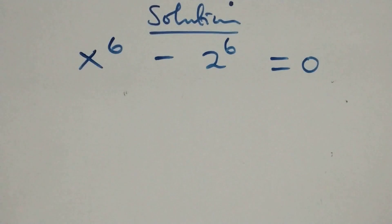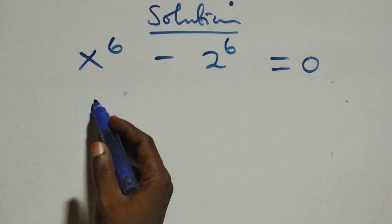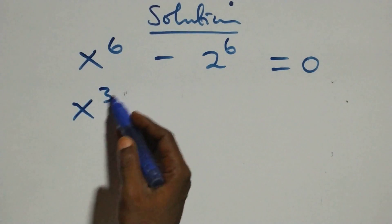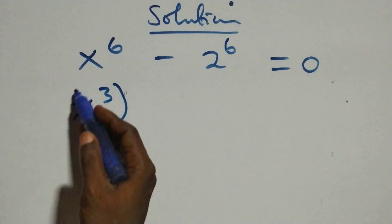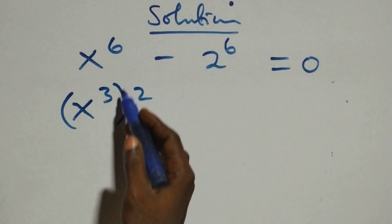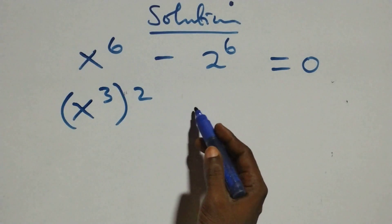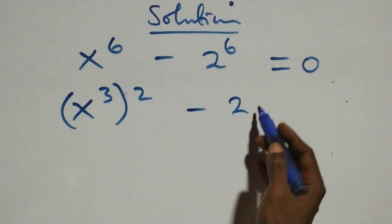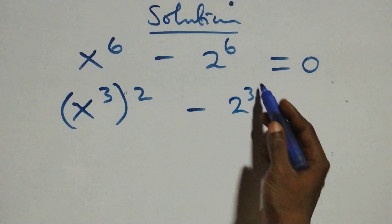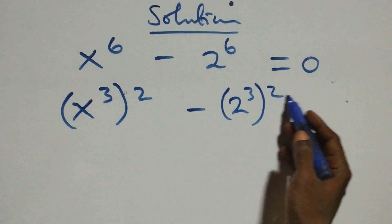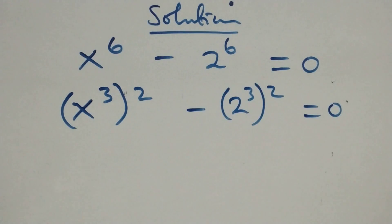The next step, we can write this as x raised to power 3, all raised to power 2, since 2 times 3 gives us 6, then also minus 2 raised to power 3, all raised to power 2, equals 0.